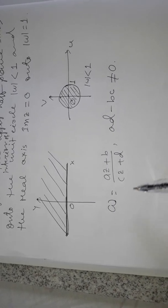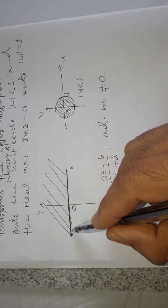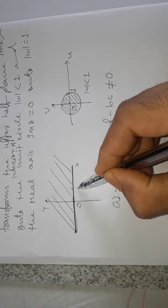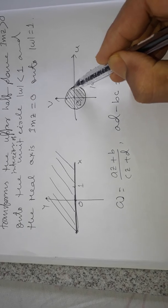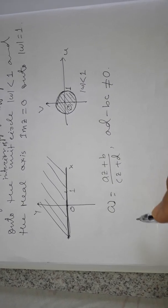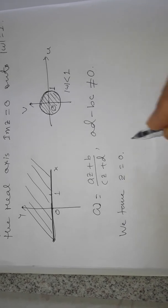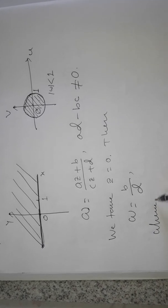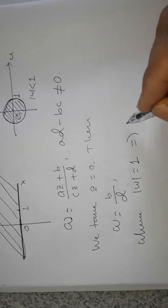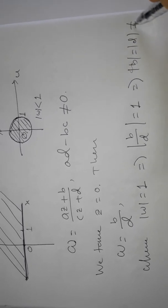We want to find the conditions on a, b, c, d such that the upper half-plane maps to the interior. We take points on the real axis: z = 0, z = 1, and z = ∞, which should each transform to points on the unit circle. For z = 0, w = b/d, and since |w| = 1, we get |b/d| = 1, which means |b| = |d|, and both b and d are nonzero.